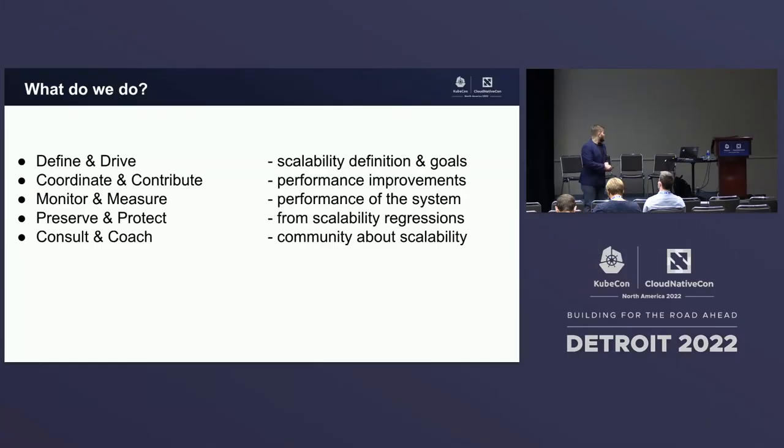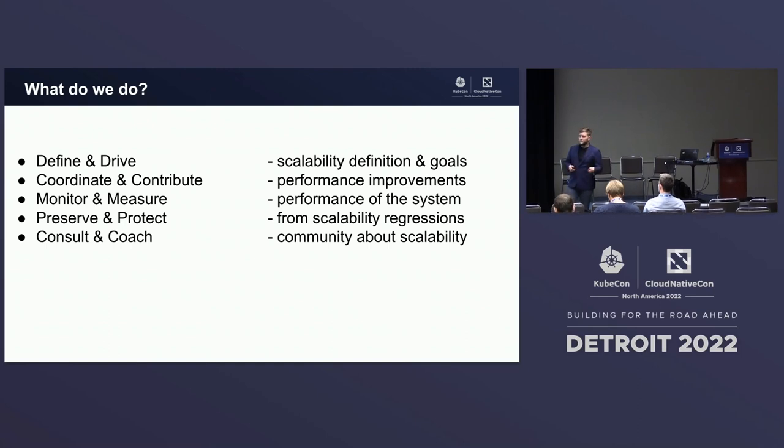We need to measure and monitor how the performance and scalability of Kubernetes actually changes over time. Every day there are multiple PRs merged into Kubernetes, and each of these PRs and features can potentially impact the performance of the whole system. That's why one of the most important areas of SIG Scalability is monitoring the performance of Kubernetes to make sure that we do not regress. Once we have this monitoring, we are able to track different metrics and see if there is any regression.